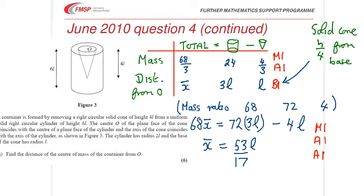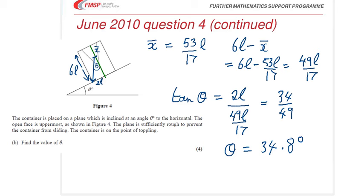And for the second part, just four marks, I believe. Yeah, just four marks for that. An M1 for working out this distance. An M1 and an A1 for working out tan theta from the triangle. And a final A1 for finding the correct value of theta.